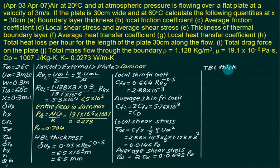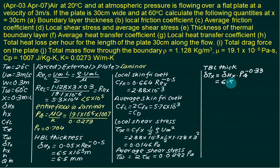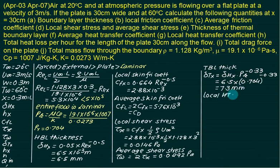The thermal boundary layer thickness δ_tx is found from the same table: δ_tx = δ_hx · Pr^(−0.33). With δ_hx = 6.5 mm and Pr = 0.704, we get δ_tx = 7.3 mm.